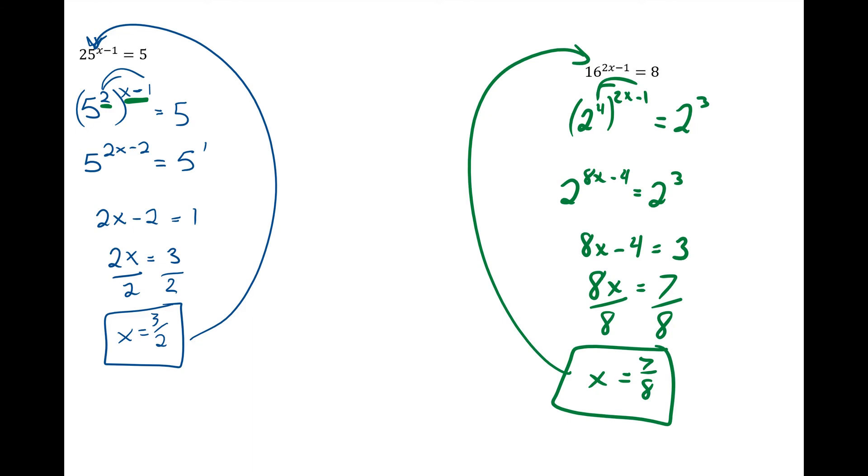So the power property of equality here says, if we can make the bases the same on either sides of an equal sign, the exponents must equal each other. The skill here is recognizing what numbers are powers of other numbers, such as 8, 16, 32, 64, going on like that. 2, 16, 27, 81. 81 is 3 to the 4th power. So being able to recognize that really helps with these problems.